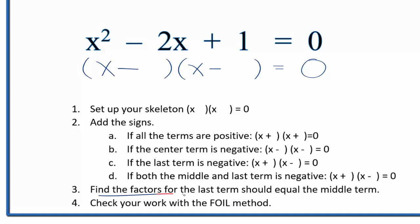Now we can find the factors for the last term, which is 1. They should equal the middle term, which is 2. The factors of 1 are 1 times 1. So if we have a 1 here and a 1 here, that adds up to 2. These should be the correct factors for our equation: x² - 2x + 1.